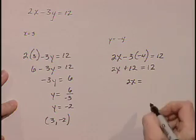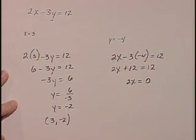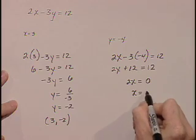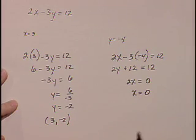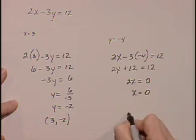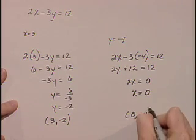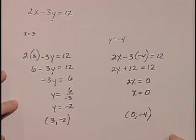2x, and 12 minus 12 is 0. Divide both sides through by 2 and we'll get x equals 0. As we write our ordered pair make sure you have them in the right order: x is 0 and y was negative 4. So we've completed the 3 choices from our original table.